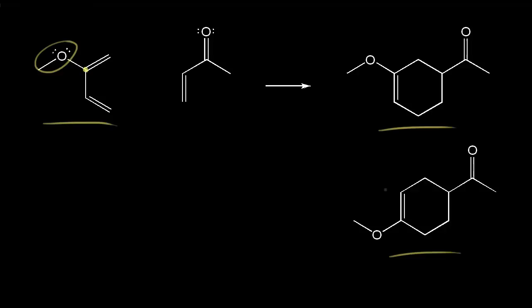To figure that out, we need to draw resonance structures for both the diene and the dienophile. Let's start with the diene. We could take this lone pair of electrons on this oxygen and move them into here, and then push these electrons off onto this carbon. So let's draw that resonance structure. Now this oxygen would have a double bond to this carbon, and then this carbon would have a lone pair of electrons on it.